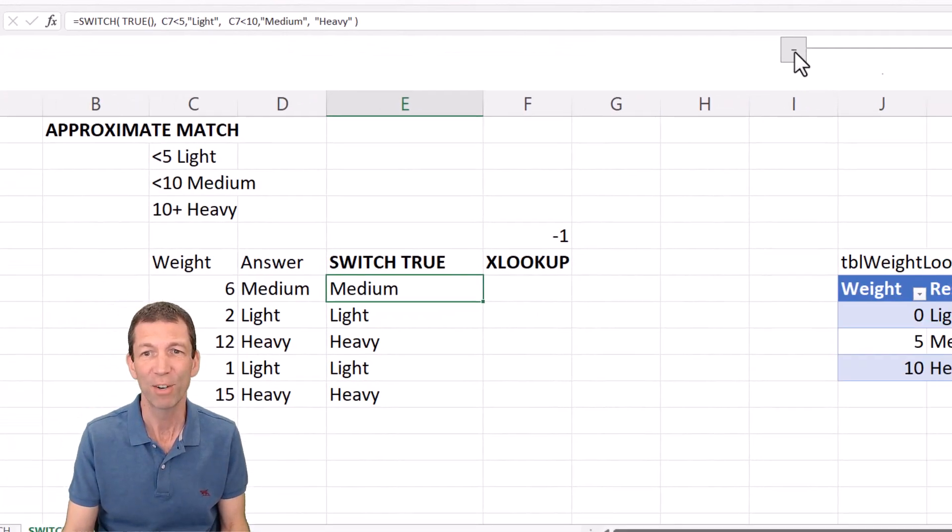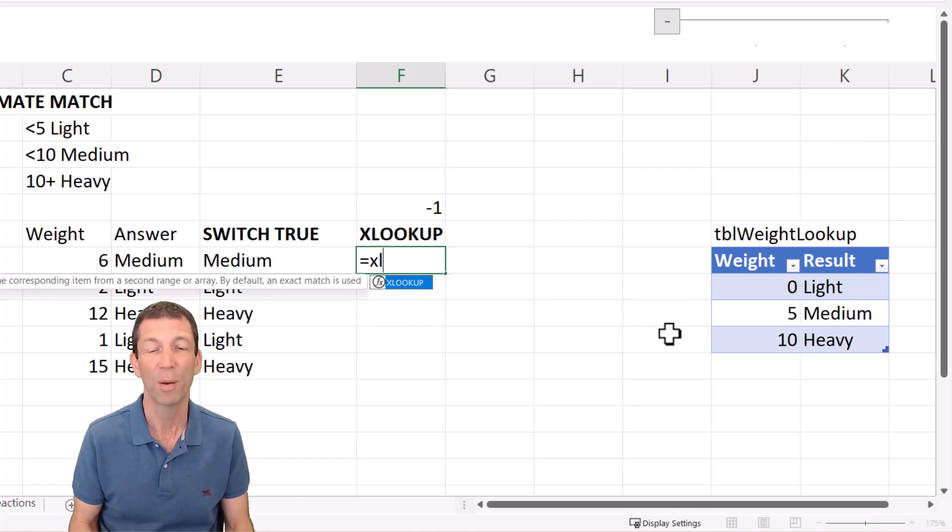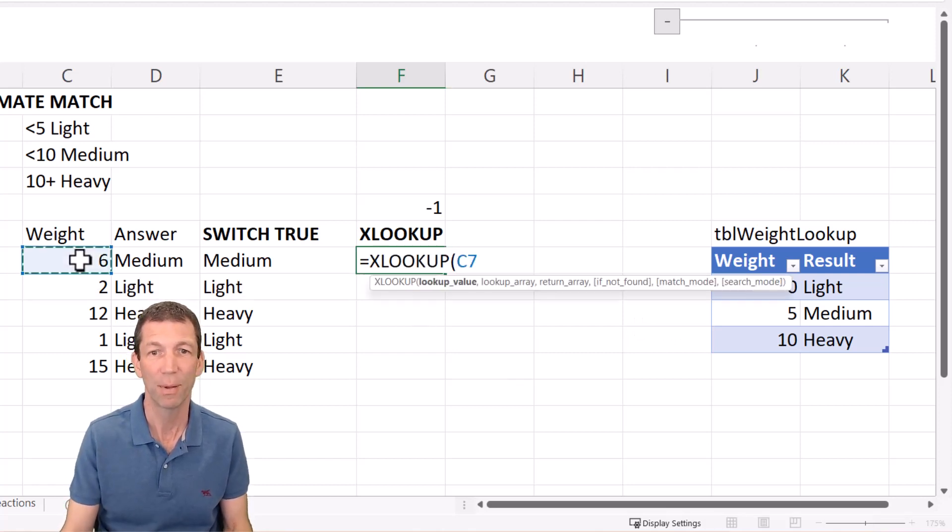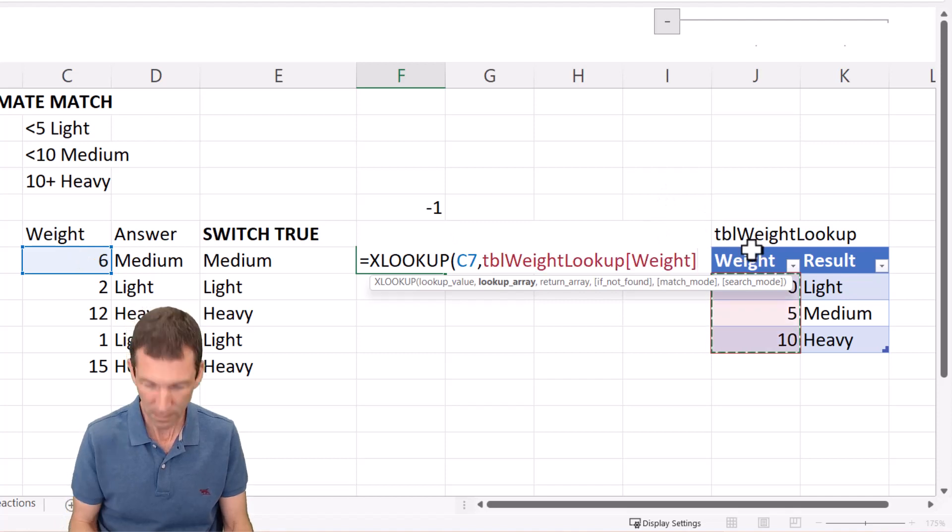But then really you know let's have a look at XLOOKUP. Again I've got a little weight table here starting at 0, so anything from 0 up to 5 is light, anything from 5 up to 10 is medium, and you can just do an XLOOKUP with an approximate match. XLOOKUP that weight comma this column comma and this result.